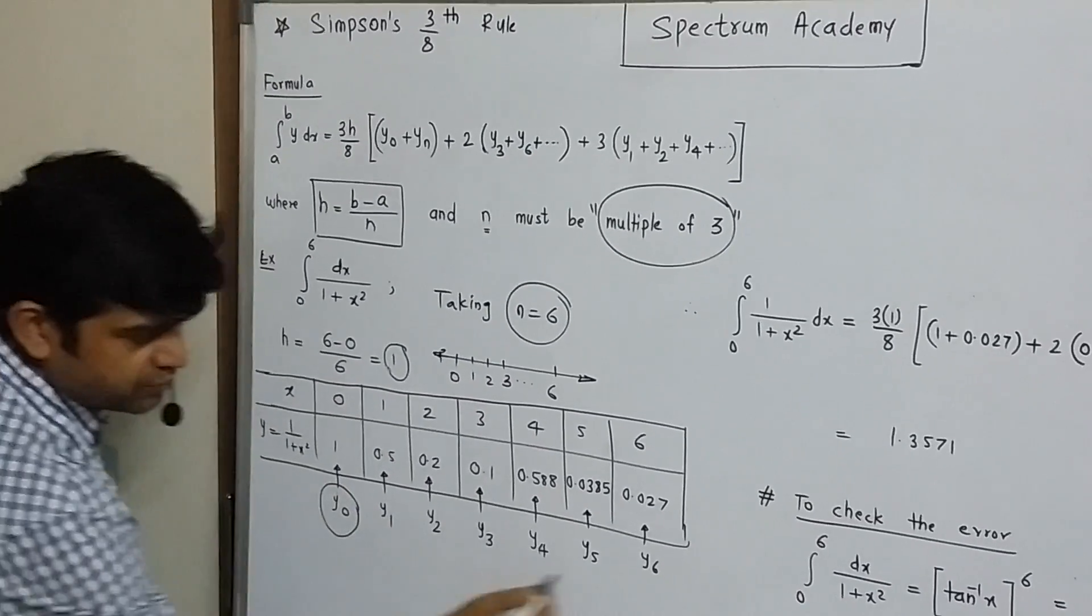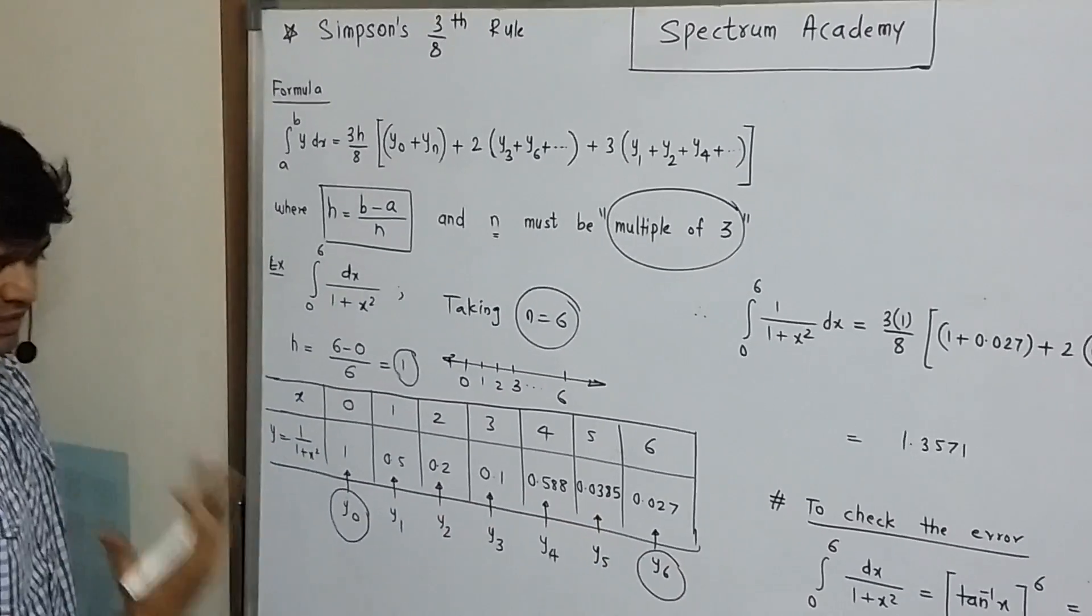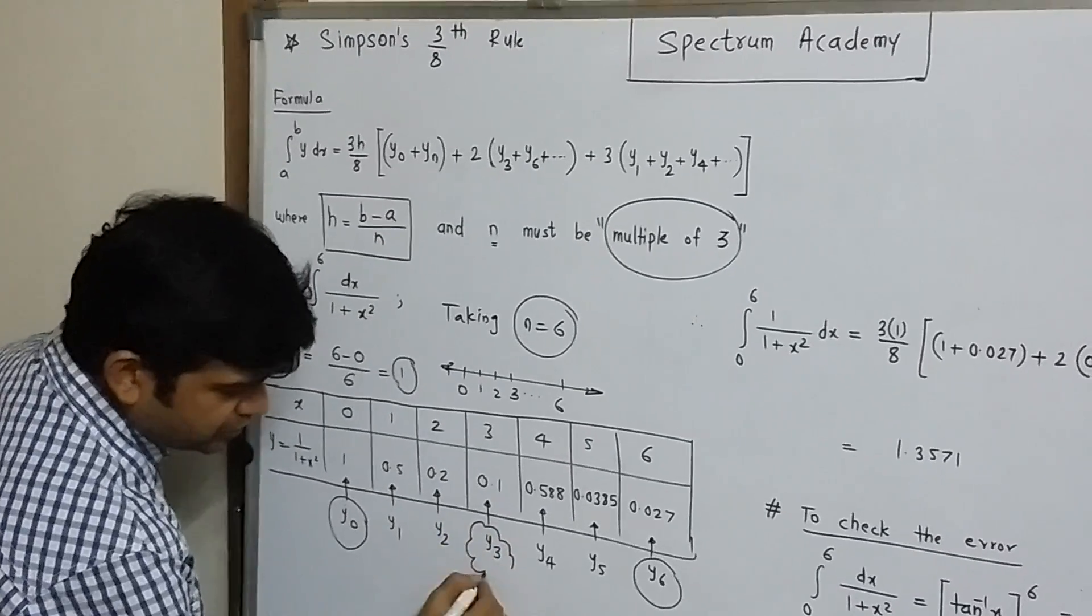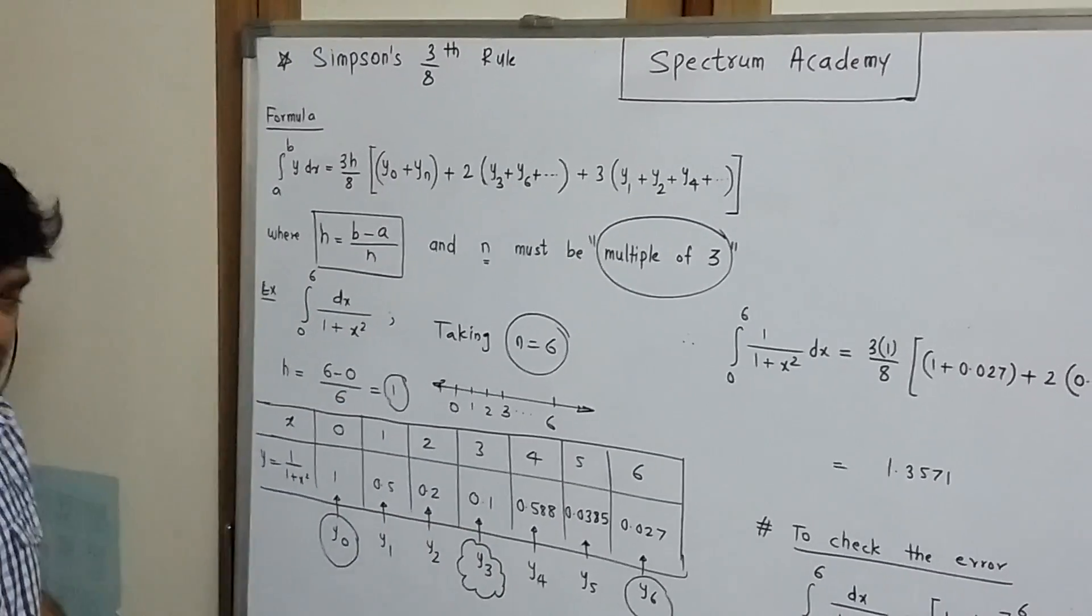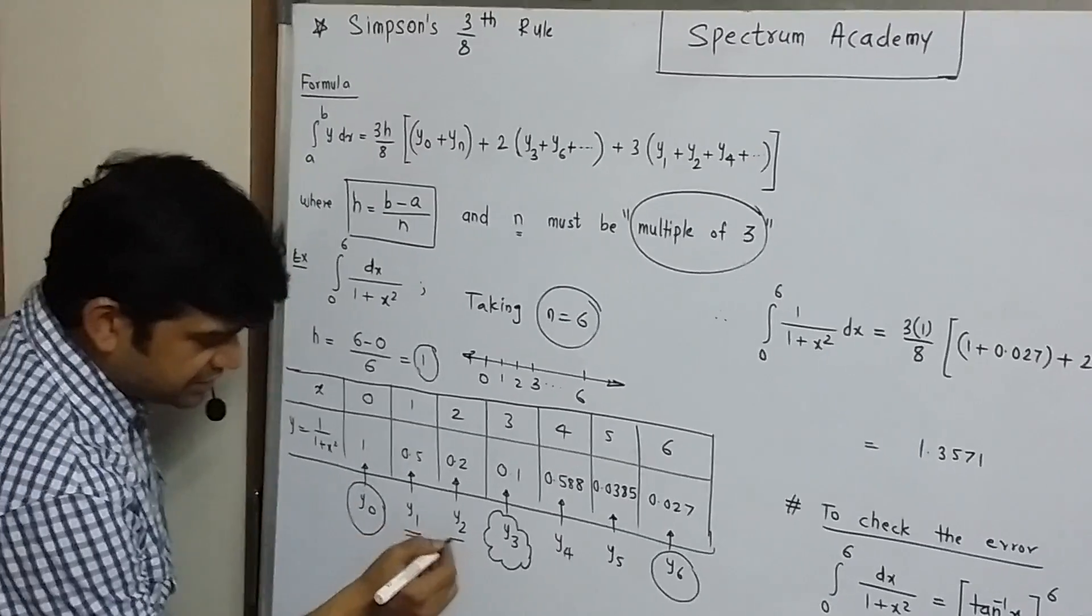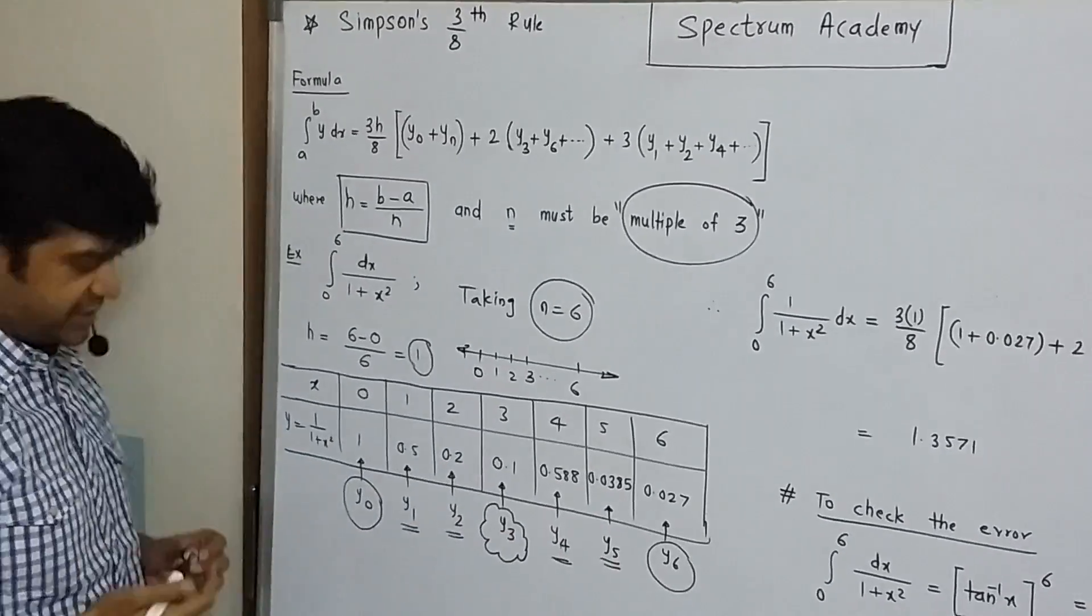Now these two values are the extreme ordinates. And y3 is the only ordinate which is multiple of 3. And these are considered as remaining ordinates.